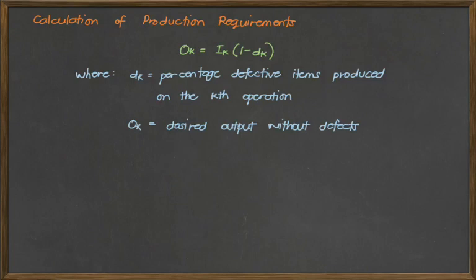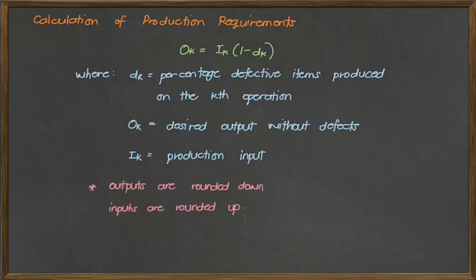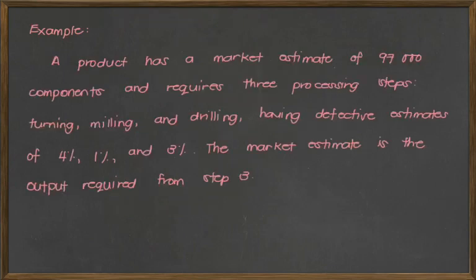O sub K is the desired output without defects, and I sub K is your production input. Now you have to take note that when we solve for the outputs, we always round it down and inputs should always be rounded up. So they should both be whole numbers. So let's have the first example.